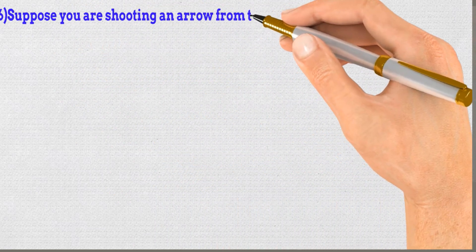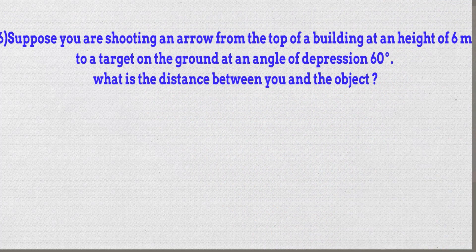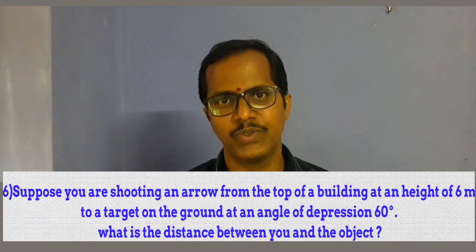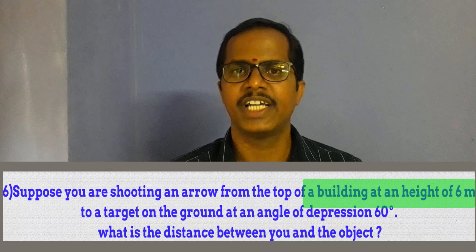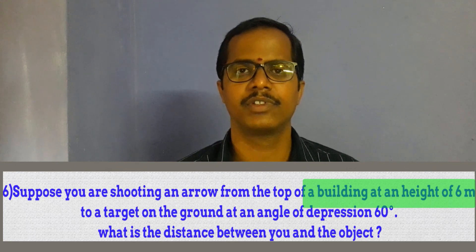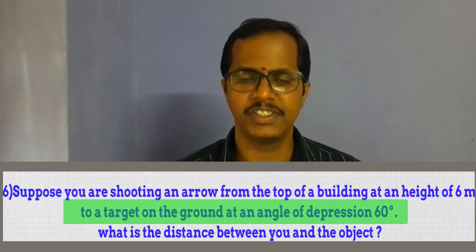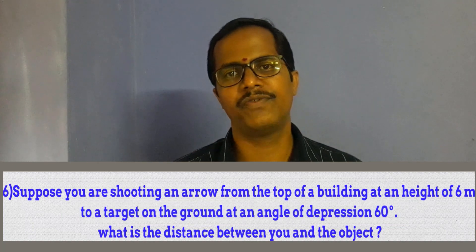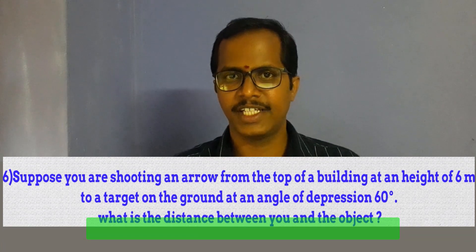Now let us see the sixth problem. Suppose you are shooting an arrow from the top of a building at a height of 6 meters to a target on the ground at an angle of depression of 60 degrees. What is the distance between you and the target? In this problem, the observer is on the top of a building of height 6 meters, shooting an arrow to a target on the ground. We need to find the distance between the observer and the target.